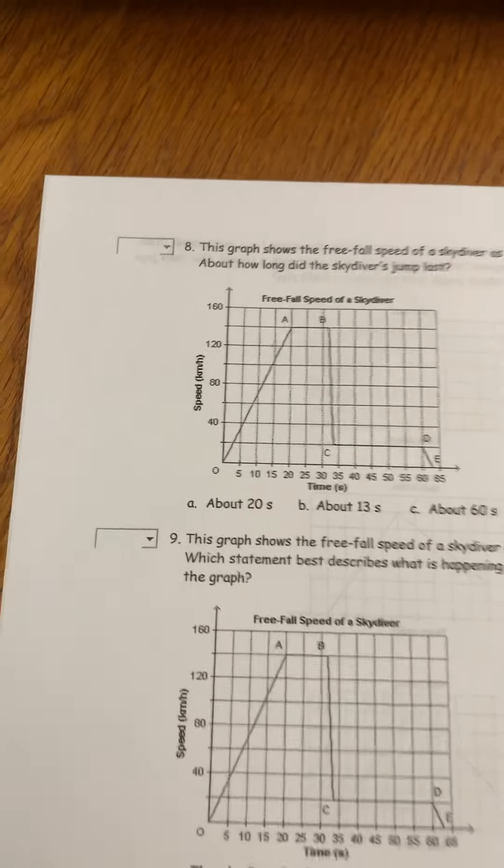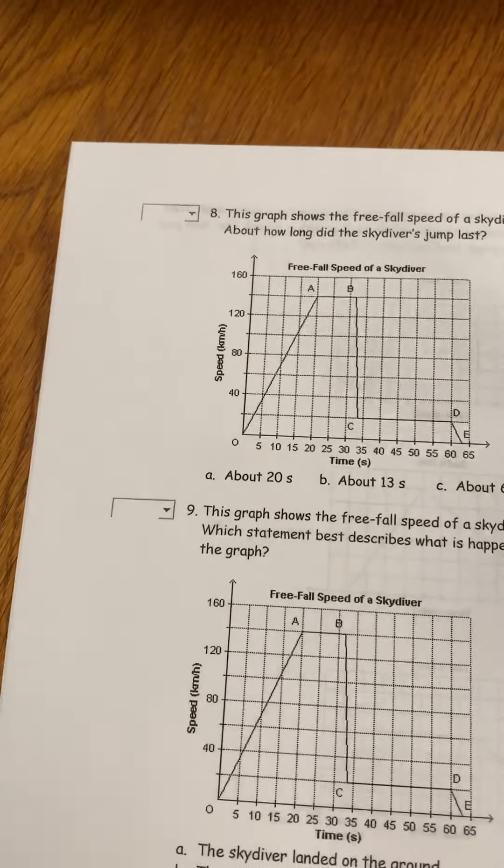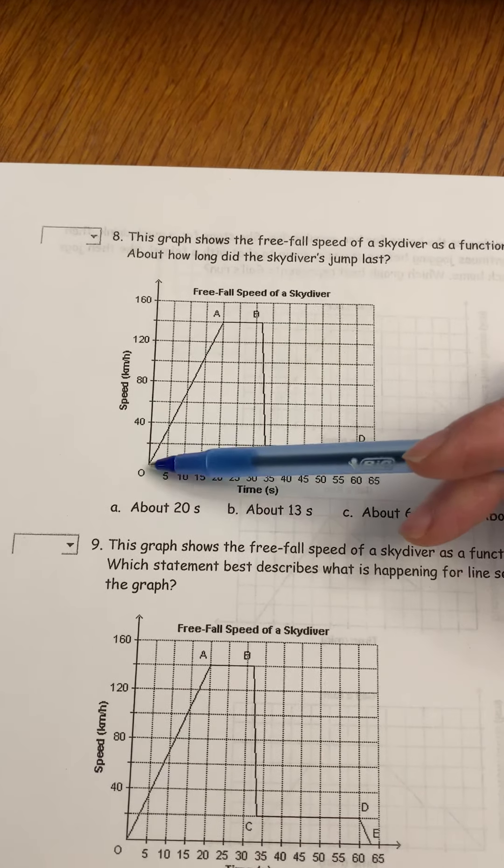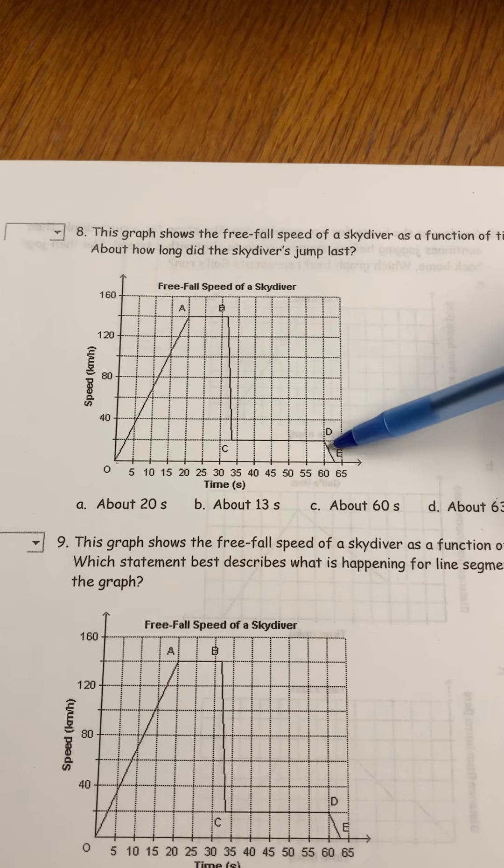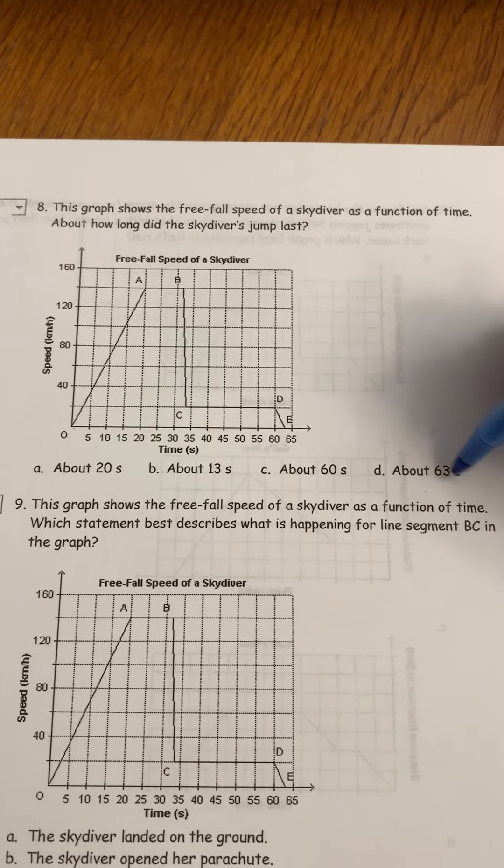Question number eight says this graph shows the free fall speed of a skydiver as a function of time. About how long did the skydivers jump last? So from here, this is all still part of the dive until they get here. So it's about 63 seconds.